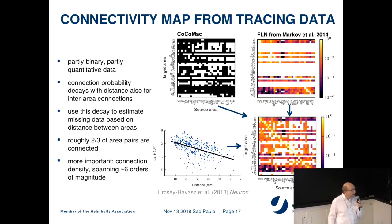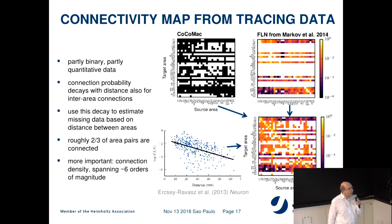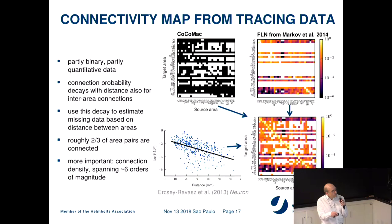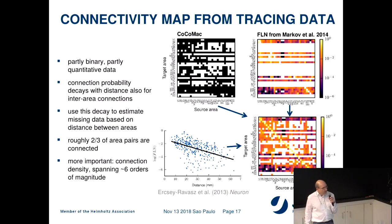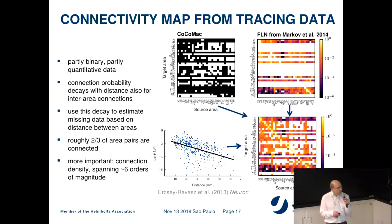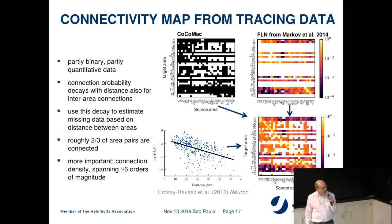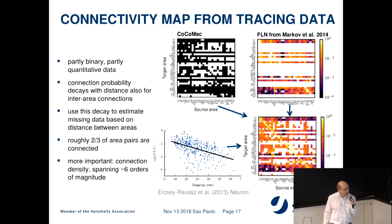These data are available in a database called the CoCoMac database. These are partly very old data, so they are often only 0 or 1. But there are also more recent data from the lab of Henry Kennedy. This lab additionally found a principle: connections between areas become weaker if they have a larger distance from each other — they call this the exponential distance rule. This principle allowed us to compile an integrated dataset of area-to-area connectivity that is also quantitative.